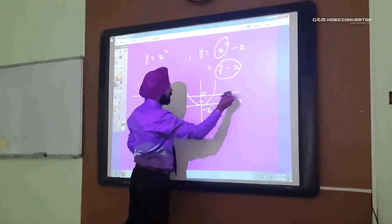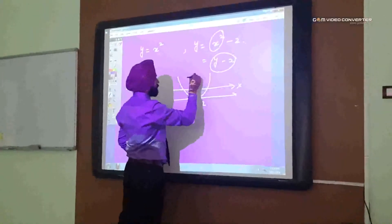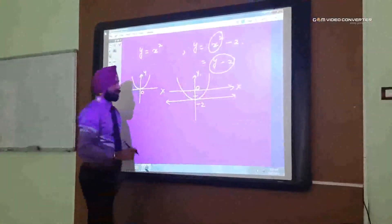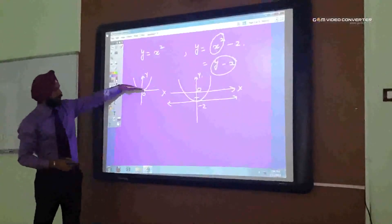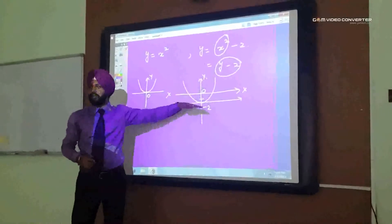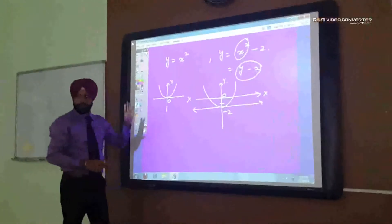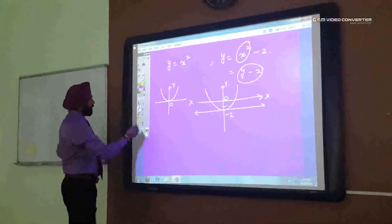So, this is our 0, this is x axis and this is y axis. So, this is how the curve changes its way. Transformation. Well, fine. So, let's take another example of reciprocal graphs.